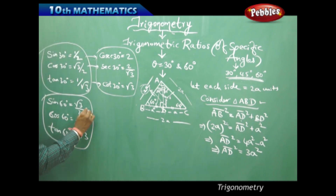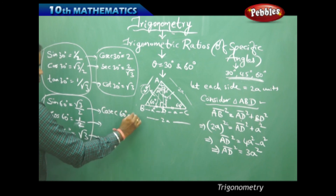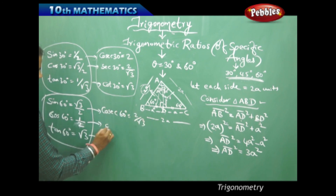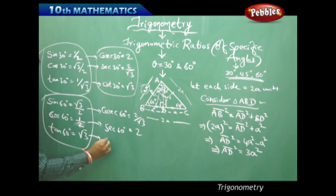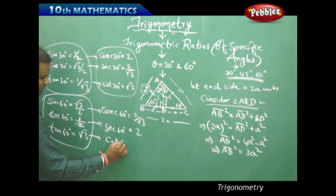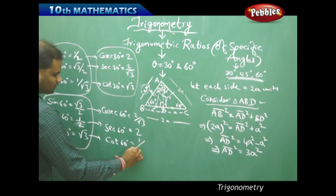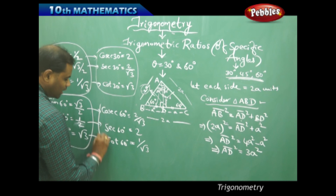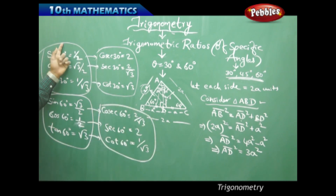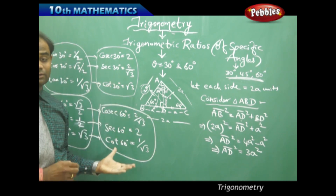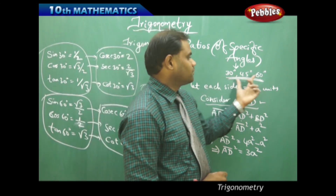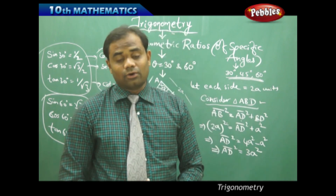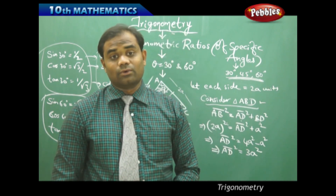The reciprocal ratios for 60° are: cosecant 60 = 2/√3, secant 60 = 2, and cot 60 = 1/√3. This completes all six trigonometric ratios for the special angles 30°, 45°, and 60°. Thank you very much.